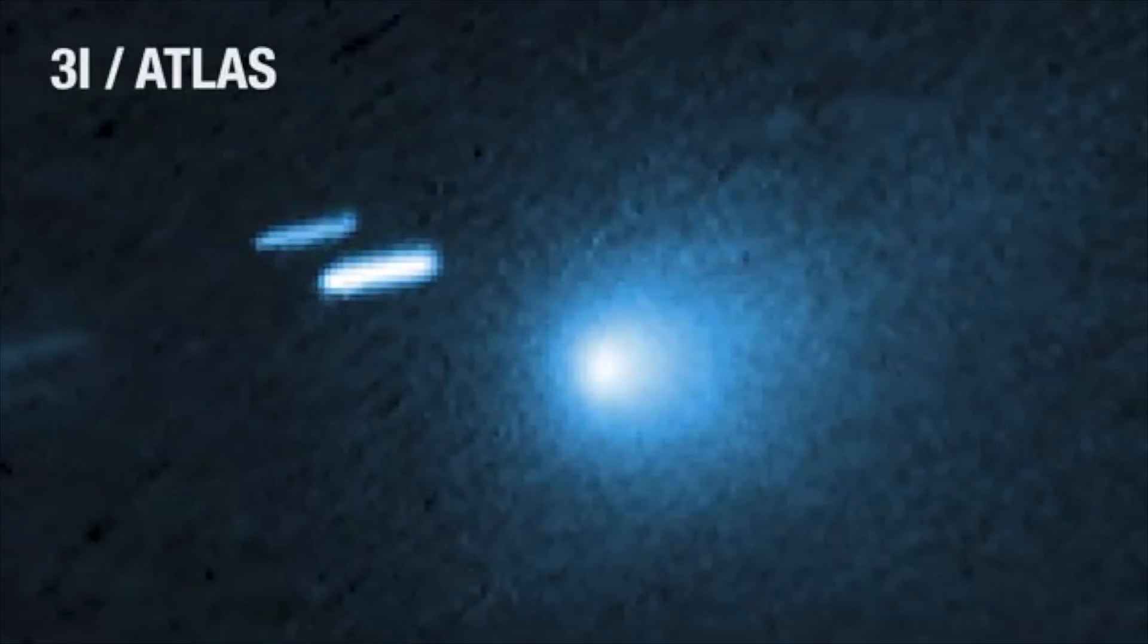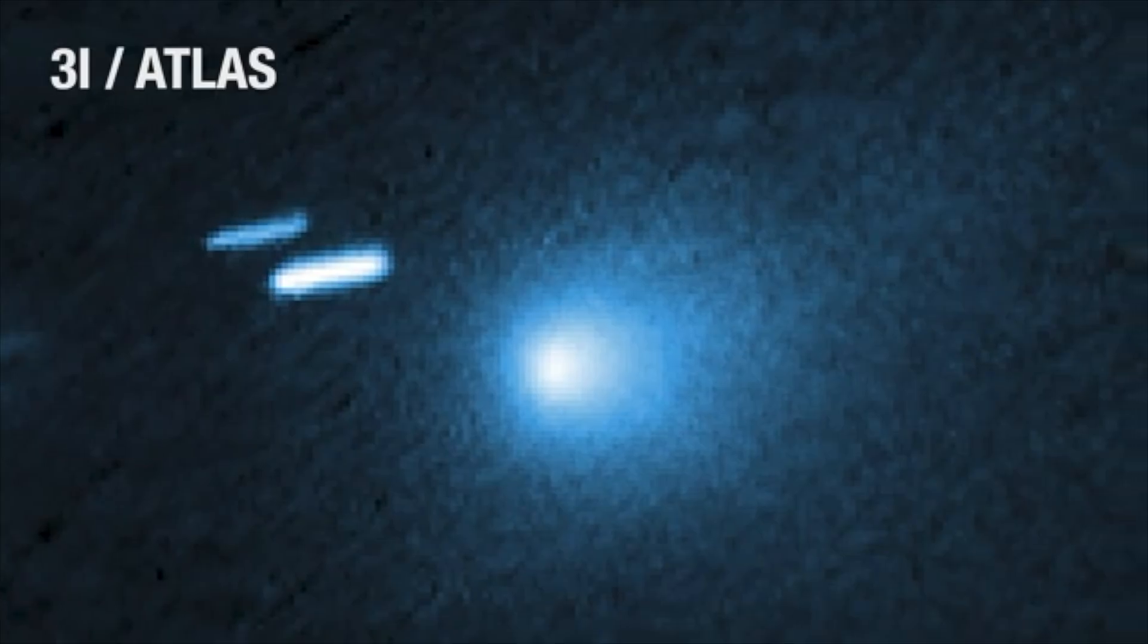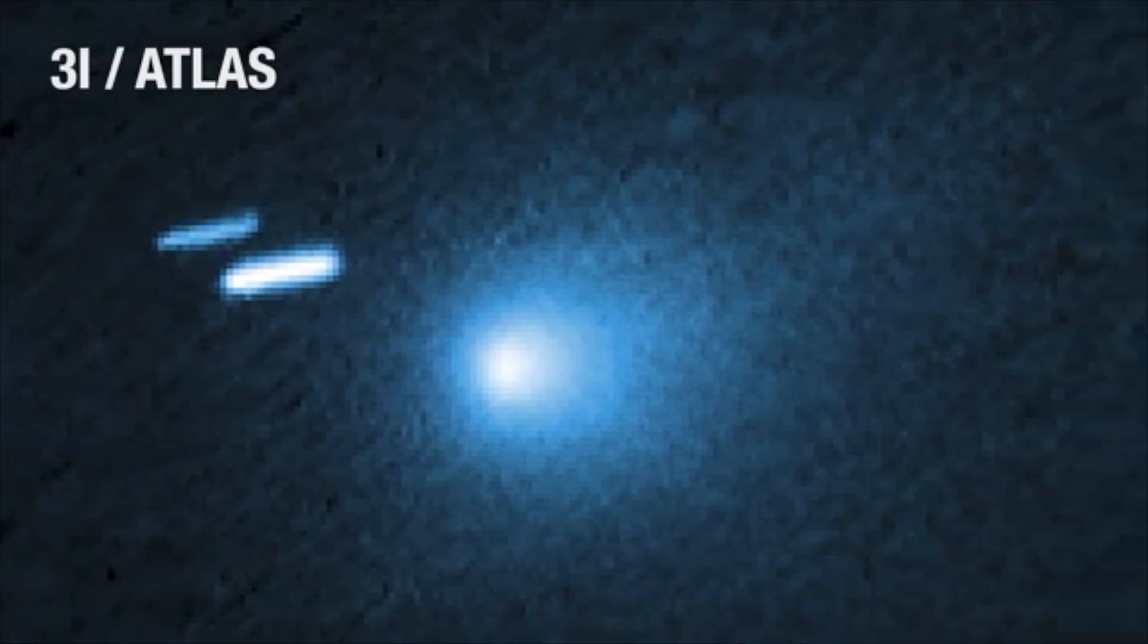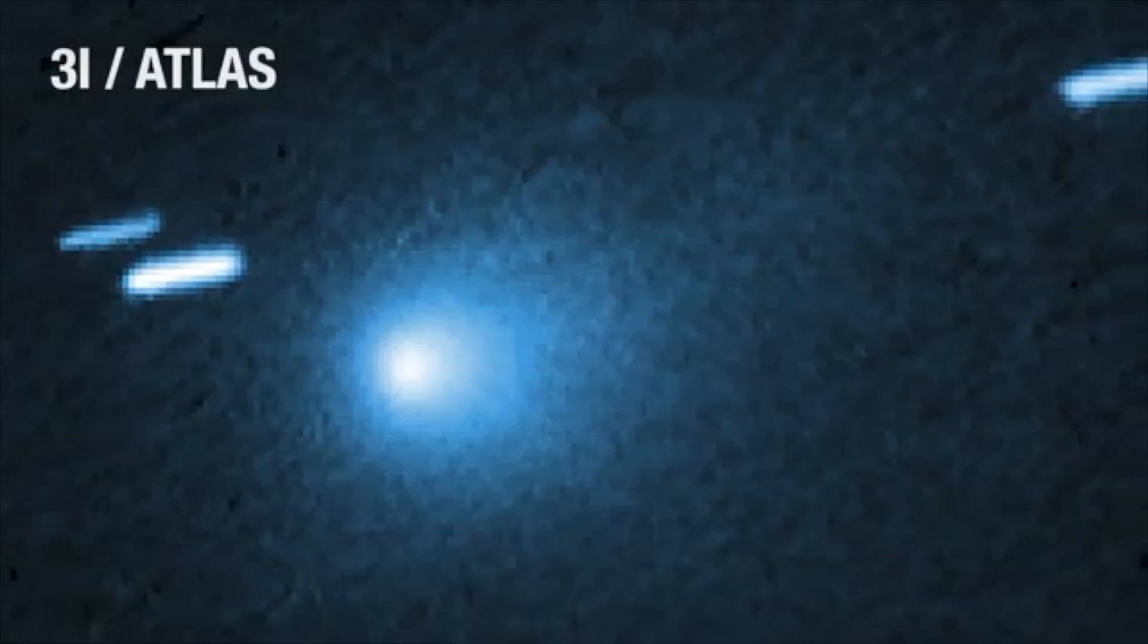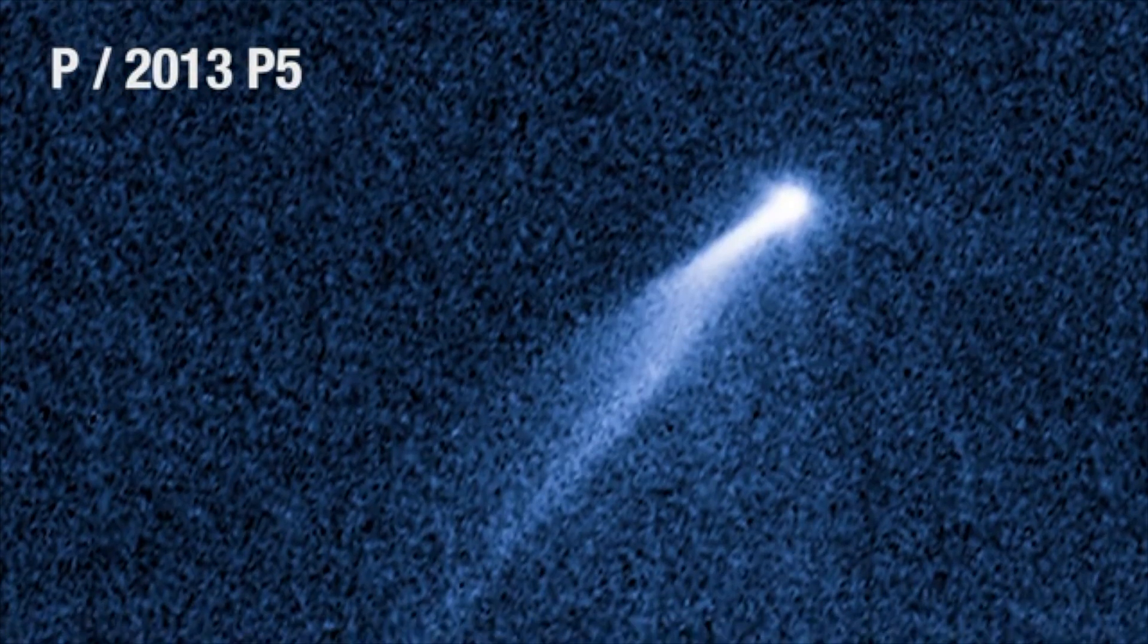Hubble captured a dust plume ejected from the sun-warmed side of the comet and the hint of a teardrop-shaped dust tail streaming away from the nucleus. This behavior is similar to that of previously seen sunbound comets originating within our solar system.